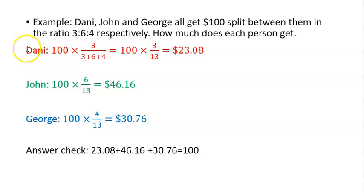Let's start with Danny. We know the total amount is 100. We multiply by the fraction, putting Danny's number on top. Danny is the first number, so we put 3 over the sum of all numbers in the ratio: 3/(3+6+4), which equals 100 times 3/13, which equals $23.08.